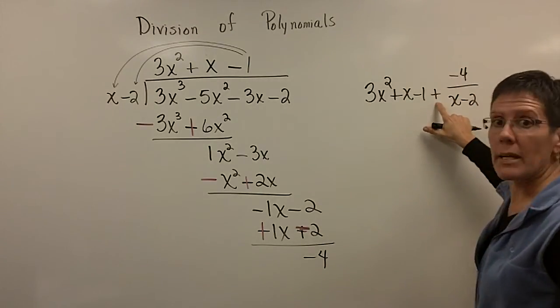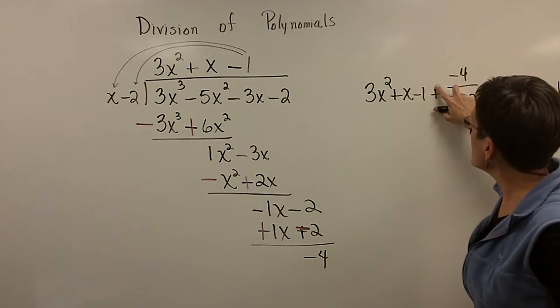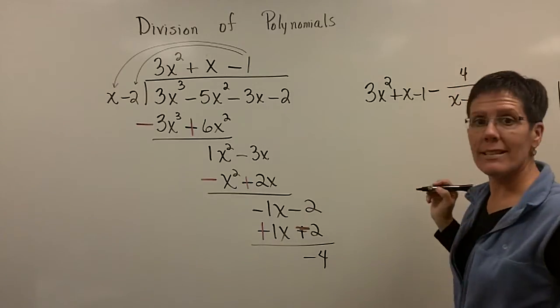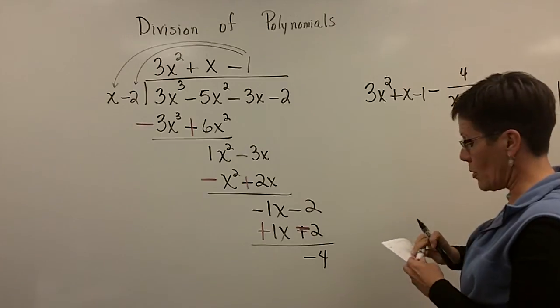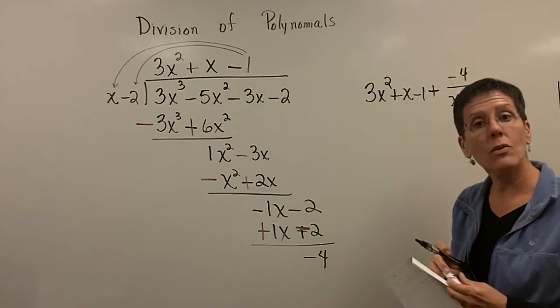This right here could be the minus sign because plus a negative 4 is the same thing as minus 4. So it doesn't have to be written like this. It could be written like that. It could just be written as minus 4 over x minus 2. But remember, that's the same as plus a negative. So either way, it can be written.